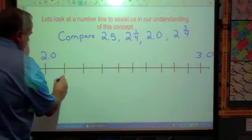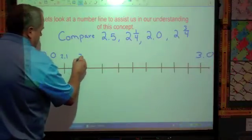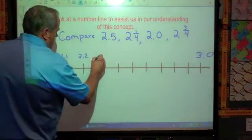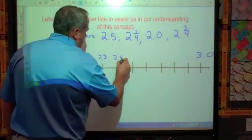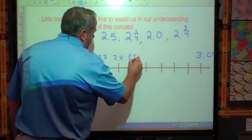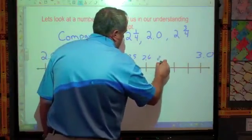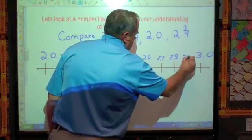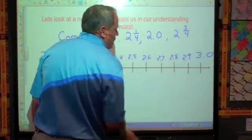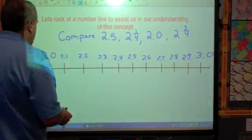If this is 2.0, then this is going to be 2.1, this is going to be 2.2, this is going to be 2.3, this is going to be 2.4, this is going to be 2.5, 2.6, 2.7, 2.8, 2.9, and 3.0.